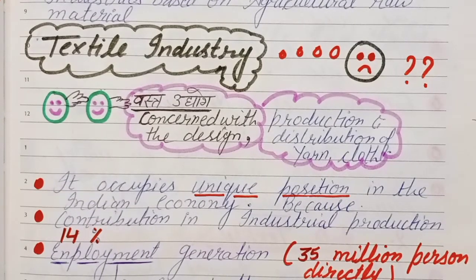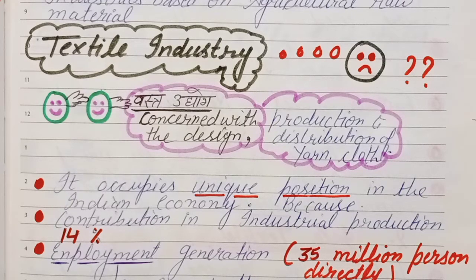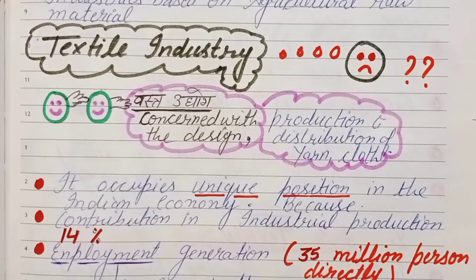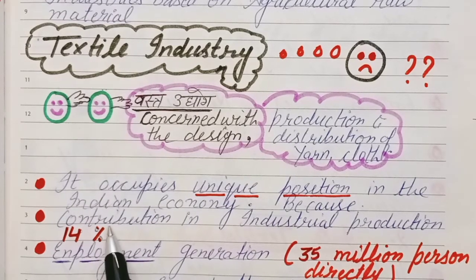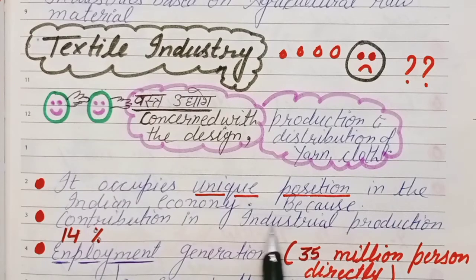Textile industry occupies a unique position in the Indian economy. If any industry has the most unique position in India's economy, it is the textile industry. Why? Because it is the oldest — it had started during the time of the British. Also, its contribution to India's total GDP is 4%.